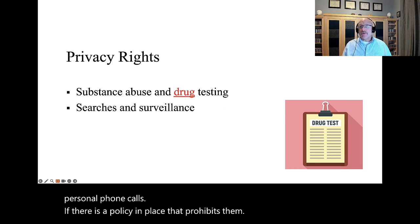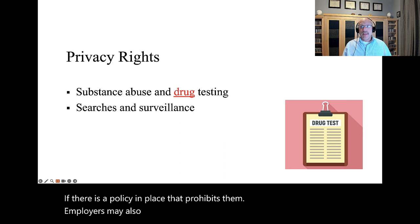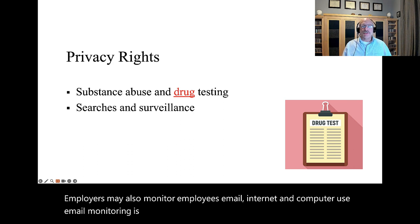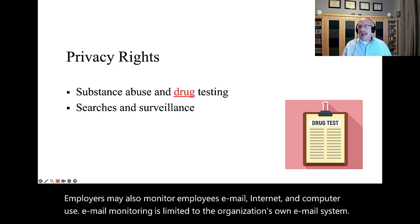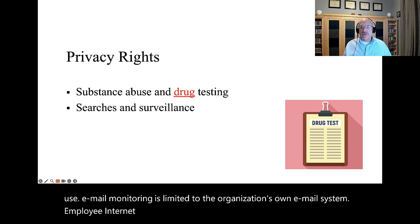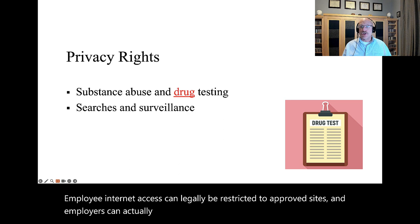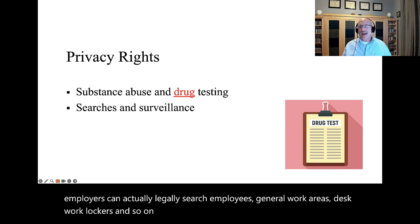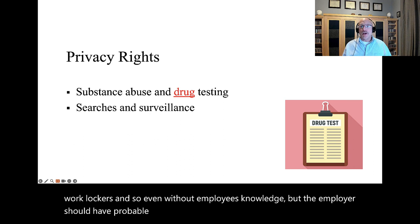Employers may also monitor employees' email, internet, and computer use. Email monitoring is limited to the organization's own email system. Employee internet access can legally be restricted to approved sites. And employers can actually legally search employees' general work areas, desk, work lockers, and so on, even without employees' knowledge. But the employer should have probable cause to conduct searches just to avoid legal issues.